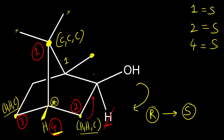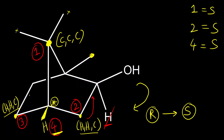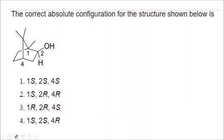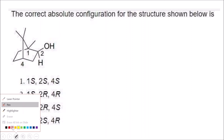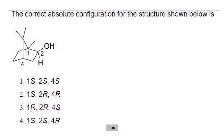So the third chiral center, carbon four, is also S. They have numbered the positions as one, two, and four, so: carbon one is S, carbon two is S, carbon four is S. The correct answer for this question is option one. You have to assign priority carefully and then you can easily get the answer.